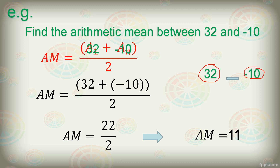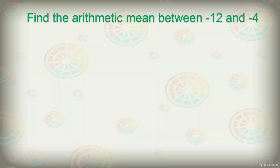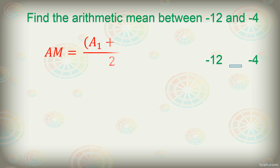That is the answer to our first problem. Let's have another example: Find the arithmetic mean between negative 12 and negative 4. Again, we are asked to look for a single arithmetic mean, so we have a similar setup for our sequence: negative 12, blank, negative 4.